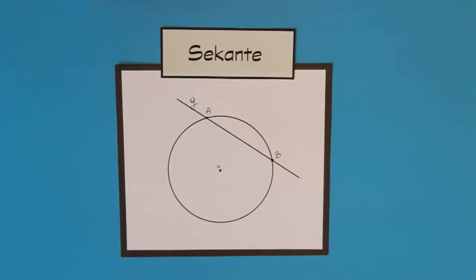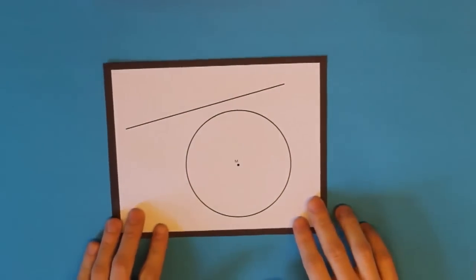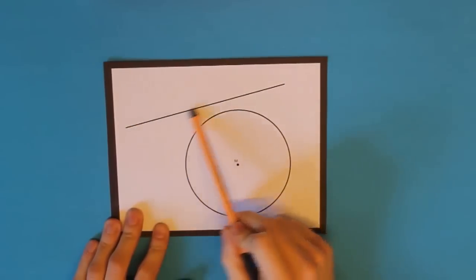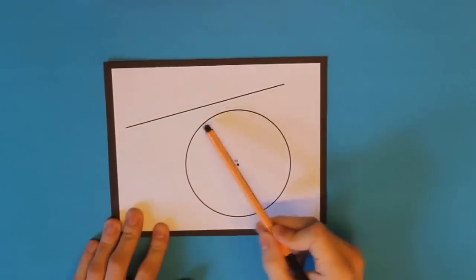Das war einmal alles zur Sekante. Jetzt sehen wir uns eine weitere Gerade an. Diese Gerade, die ich jetzt hier habe, verläuft komplett außerhalb des Kreises. Also sie schneiden den Kreis in keinem einzigen Punkt. Sie geht also komplett am Kreis vorbei.